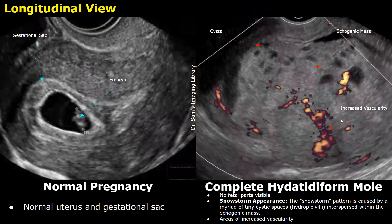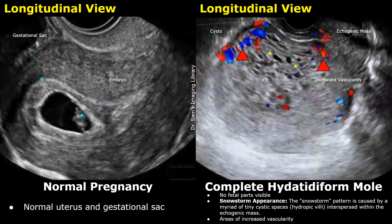Doppler features of a molar pregnancy are variable, but in typical cases, areas of increased vascularity are seen. In this image, power Doppler is applied — you can see Doppler signals within the echogenic mass, suggesting areas of increased vascularity. In this next image, color Doppler is applied, and you can again see areas of increased vascularity within the echogenic mass.